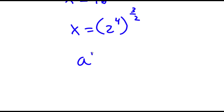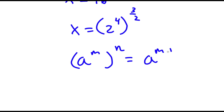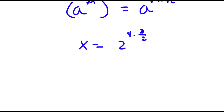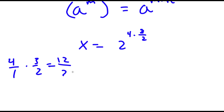Now again, if I have something in the form a to the power of m, to the power of n, this is equal to a to the power of m times n. So 2 to the power of 4, to the power of 3 over 2, that's going to equal 2 to the power of 4 times 3 over 2. And now 4 times 3 over 2 is the same thing as 4 over 1 times 3 over 2. 4 times 3 is 12, and 1 times 2 is 2, so 12 over 2 which is equal to 6.